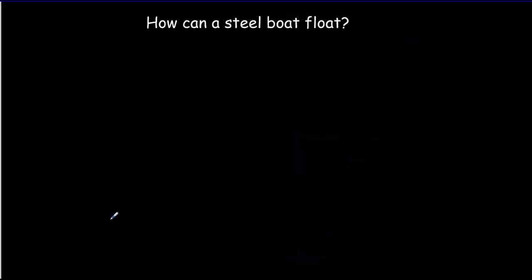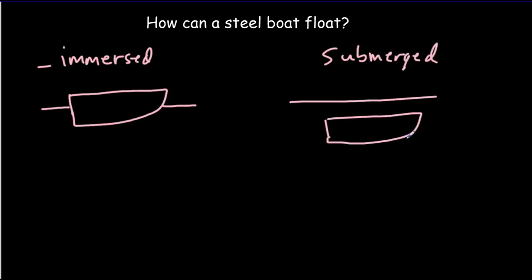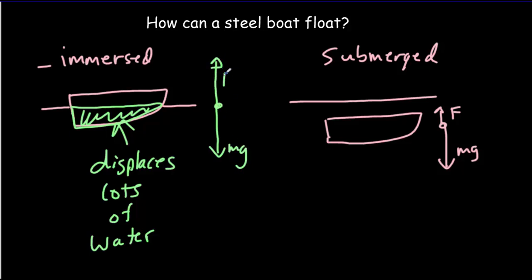Steel is certainly more dense than water — so how can a steel boat float? The key is the difference between a submerged object, where the entire object is below the surface, and an immersed object like a boat that's partially in the water and partially out. If the boat were fully submerged, its weight would exceed the buoyant force and it would sink. But a wide immersed boat can displace a lot of water, so the buoyant force — the weight of the water displaced — can exactly equal the weight of the boat, and it floats.